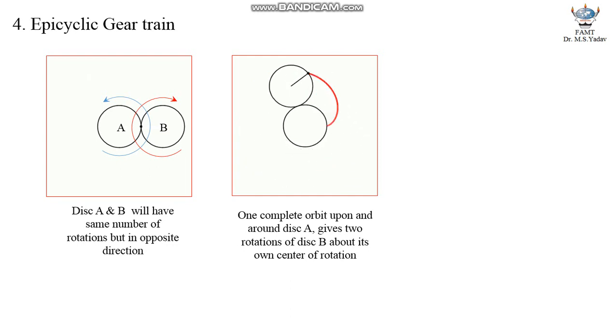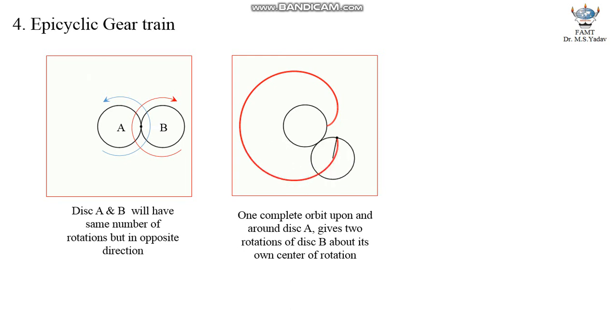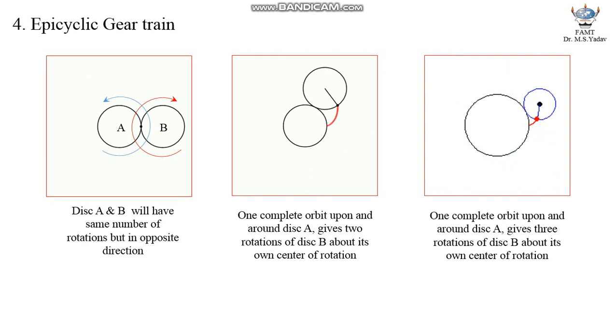Well, the curve it has stressed is obviously a cycloidal curve. Now, the radius of disc B is half the radius of disc A and once again it is made to move upon and around disc A, like this. You will find, now disc B turns three times about its own center of rotation, while completing one orbit around disc A.